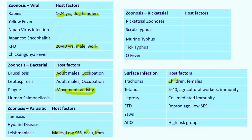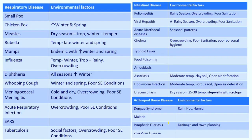Trachoma: children are more commonly affected; females also more affected among adults. Tetanus: five to 40 years most commonly affected; agricultural workers and professions with more wound exposure. Leprosy: cell-mediated immunity plays an important role among host factors. Sexually transmitted diseases: reproductive age group and low socioeconomic status are more commonly affected. AIDS: high-risk groups are the most common group getting affected.